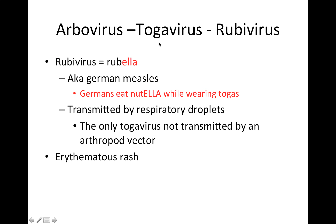We'll start on rubivirus, which is rubella. I highlighted the last part in red, and we're going to associate that with Nutella — rubella, Nutella, both end in 'ella.' Rubivirus or rubella is also known as German measles, not to be confused with measles from our previous video. To remember that, we're going to think: Germans eat Nutella while wearing togas, because it's part of togavirus.